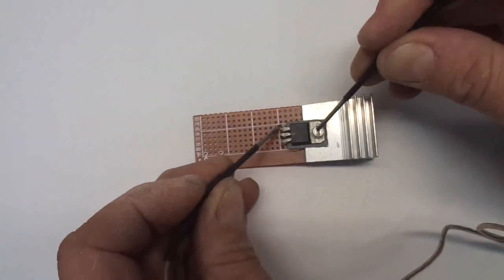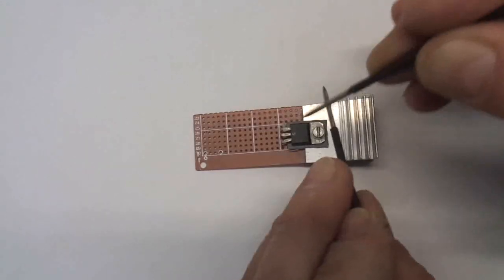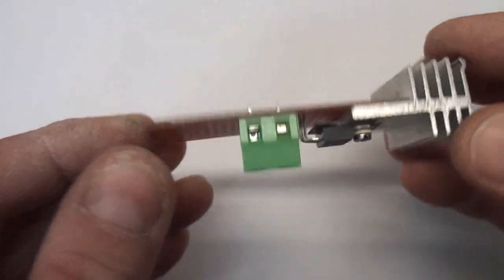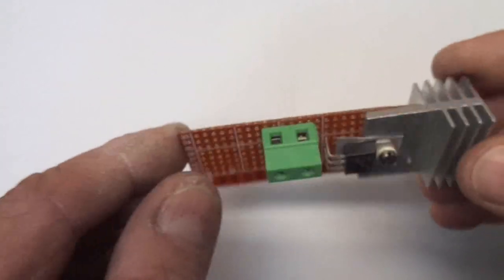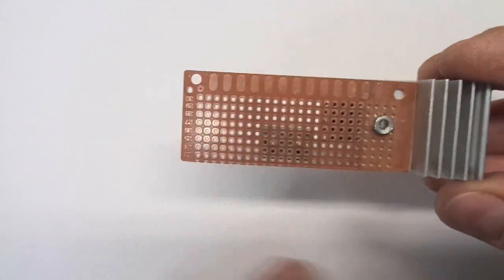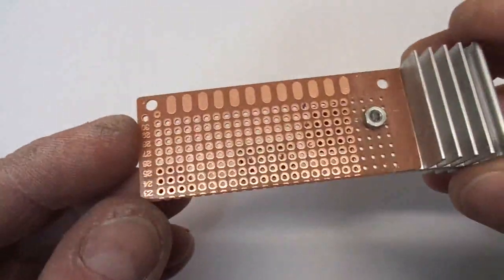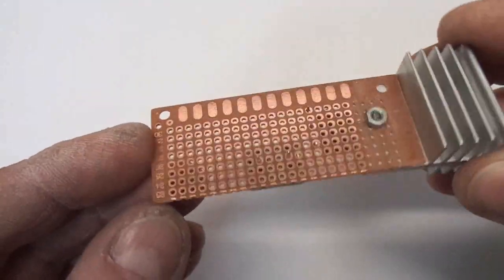Next step is to solder the screw terminal to the triac and remove all the unnecessary copper.